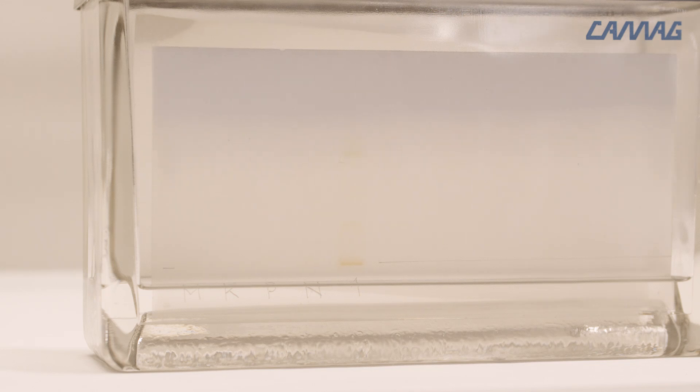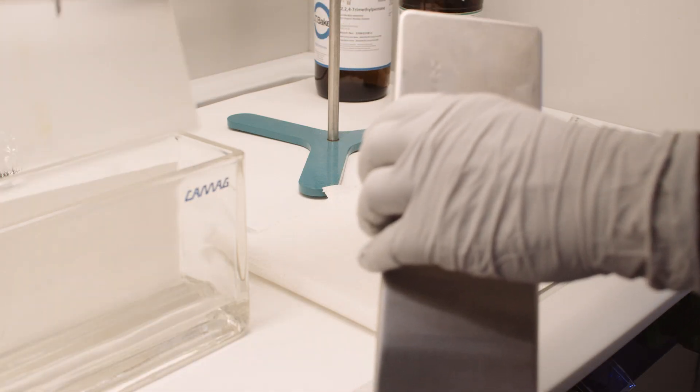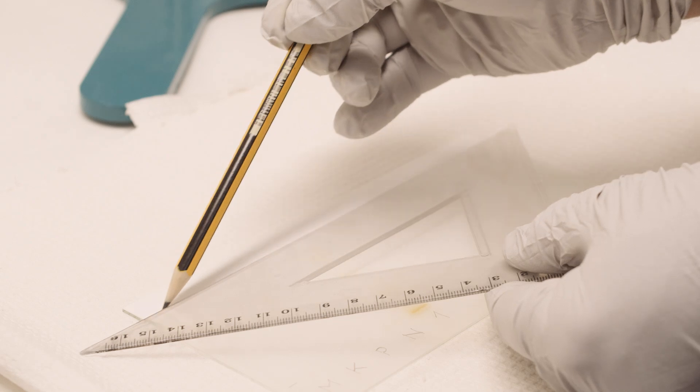When we observe that the solvent front reaches the mark for the front at the top of the tile, the tile is removed from the top and the level of the front is marked and dried.